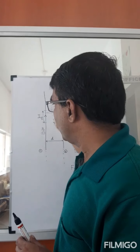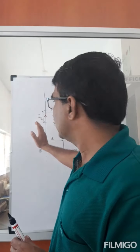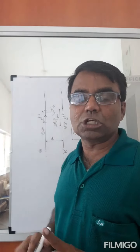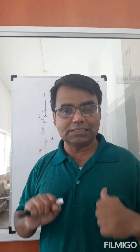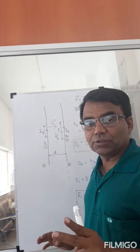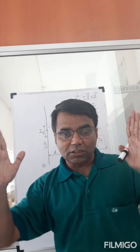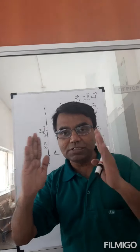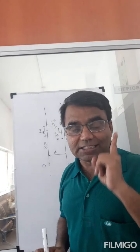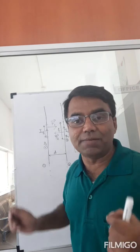So this conductor with current I2 exerts a force F1 on conductor 1, and conductor 1 with current I1 exerts a force F2 on conductor 2. Both forces are equal in magnitude and opposite in direction. From this you can conclude that if you have two conductors carrying current and the currents are in the same direction, then the conductors are going to be attracted towards each other.